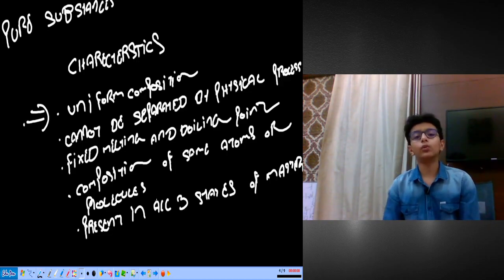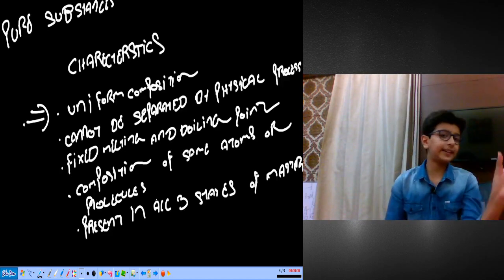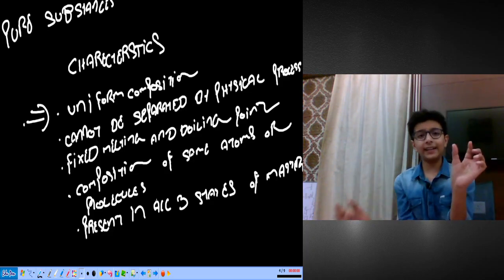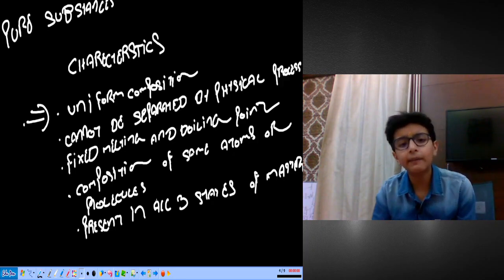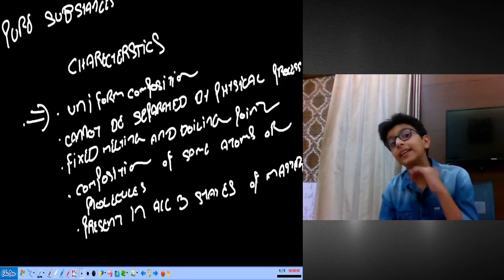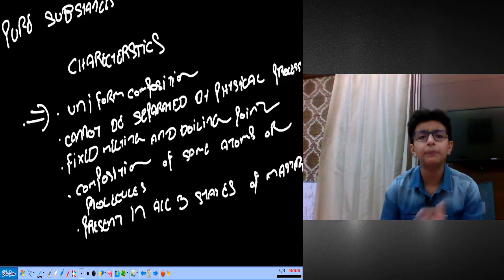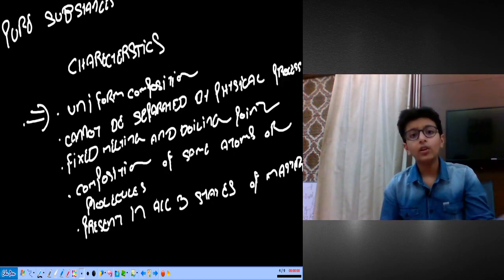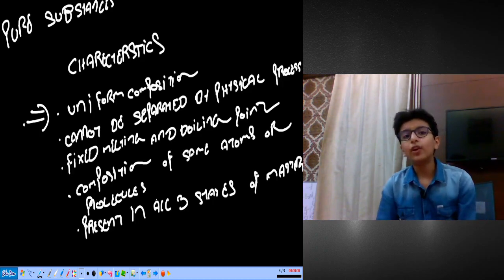The fourth characteristic is that the composition of atoms and molecules is the same throughout. The same atoms and molecules — if it is iron (Fe) here, it will be iron everywhere; it will not suddenly become an aluminum molecule. The fifth characteristic is that a pure substance can be present in all three states of matter — for example, water can be present as ice (solid), liquid water, and water vapor (gaseous state).